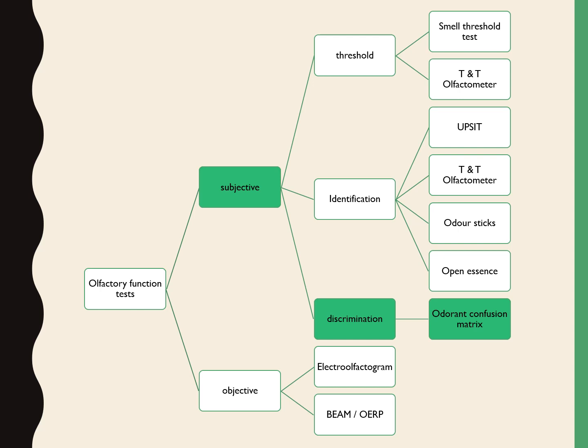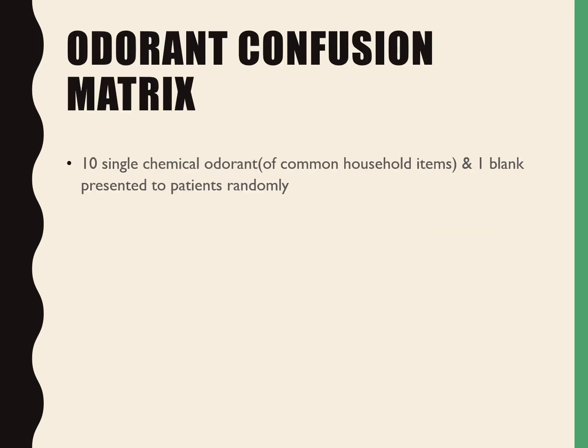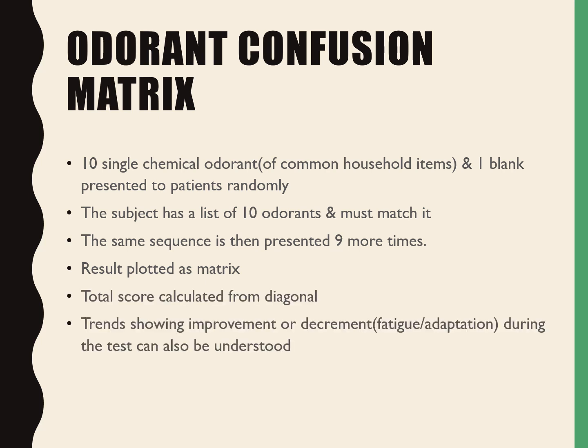The next test is the odorant confusion matrix, which is a discrimination type of subjective test. Ten single chemical odorants of common household items and one blank are presented to the patient randomly. The subject has a list of ten odorants and must match them. The same sequence is then presented nine more times and the result is plotted as a matrix. A total score is calculated from the diagonal, and trends showing improvement or decrement such as fatigue or adaptation during the test can be understood.